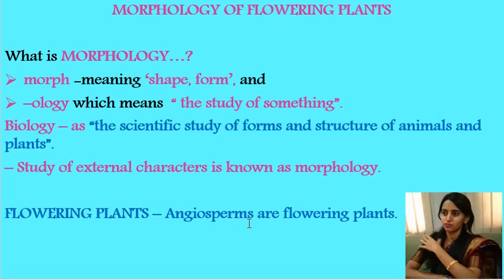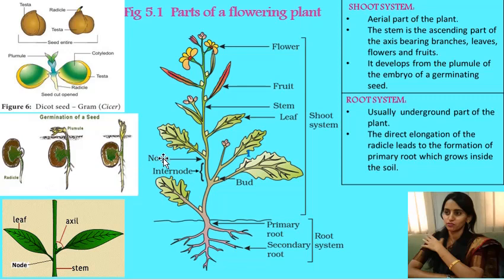So, in this chapter we are going to learn in detail about the morphology of angiosperms, that is the morphology of flowering plants. When you uproot a plant from the soil, you can differentiate the plant body into the root system and shoot system. The roots develop from the radicle of the embryo, whereas the shoot develops from the plumule of the embryonal axis.